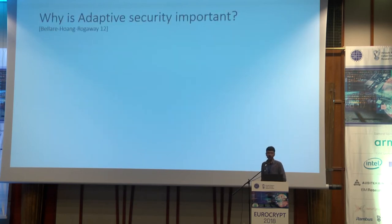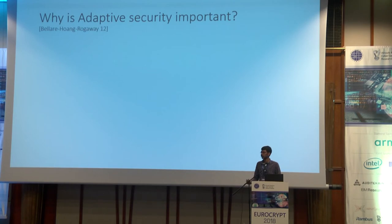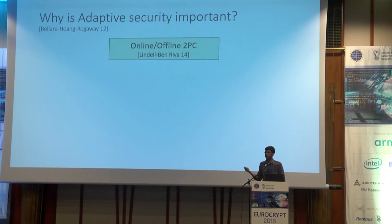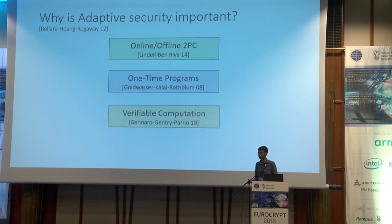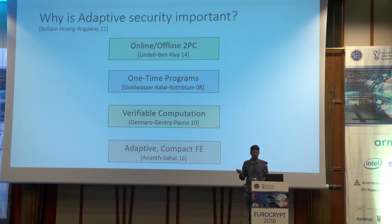Let me motivate why adaptive security is important. Even though for the most important application of garbled circuits — two-party computation — selective security is sufficient, there are certain applications that require the stronger notion of adaptive security: for example, the online-offline two-party computation setting, one-time programs, verifiable computation, and even adaptive compact FE.